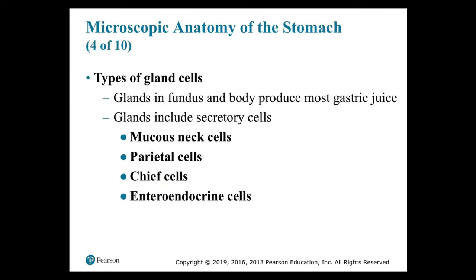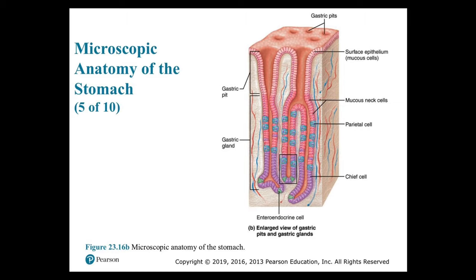The types of gland cells: glands in the fundus and body produce most gastric juice and include mucus neck cells, parietal cells, chief cells, and enteroendocrine cells, secreting about 1,500 mL of gastric juice each day. Figure 23.16B shows the microscopic anatomy of the stomach — locate the mucus cells in the surface epithelium, gastric pit, mucus neck cells, parietal cells, chief cells, gastric gland, and enteroendocrine cells.